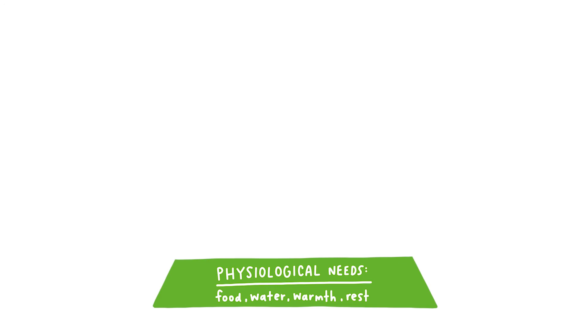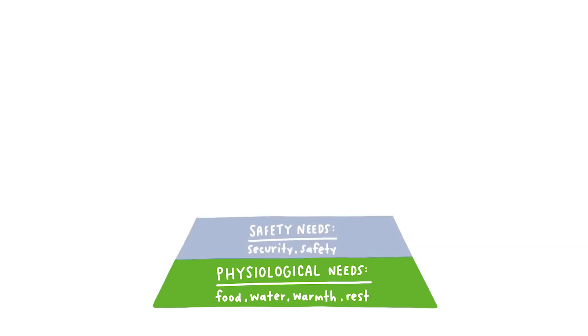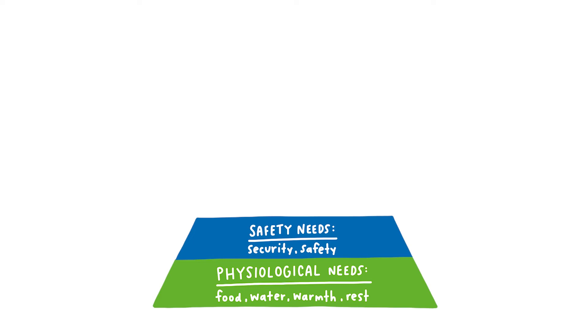Let's consider each of the five stages. At the bottom of the hierarchy is the first basic need: physiological needs. These are biological requirements for survival, such as air, food, drink, shelter and sleep. The next basic need refers to safety needs and considers all aspects of safety — from the elements, from harm, security, order, law, stability and the freedom from fear.